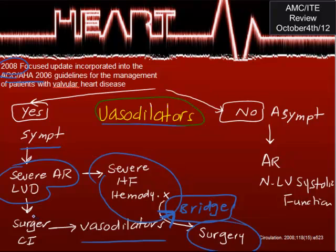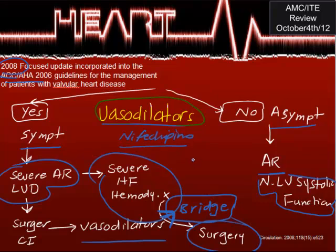Vasodilators are not indicated for asymptomatic aortic regurg with normal left ventricular systolic function — no vasodilators in that case. The vasodilators used are nifedipine, a calcium channel blocker, or an ACE inhibitor. These are the key agents for aortic regurg medical management.